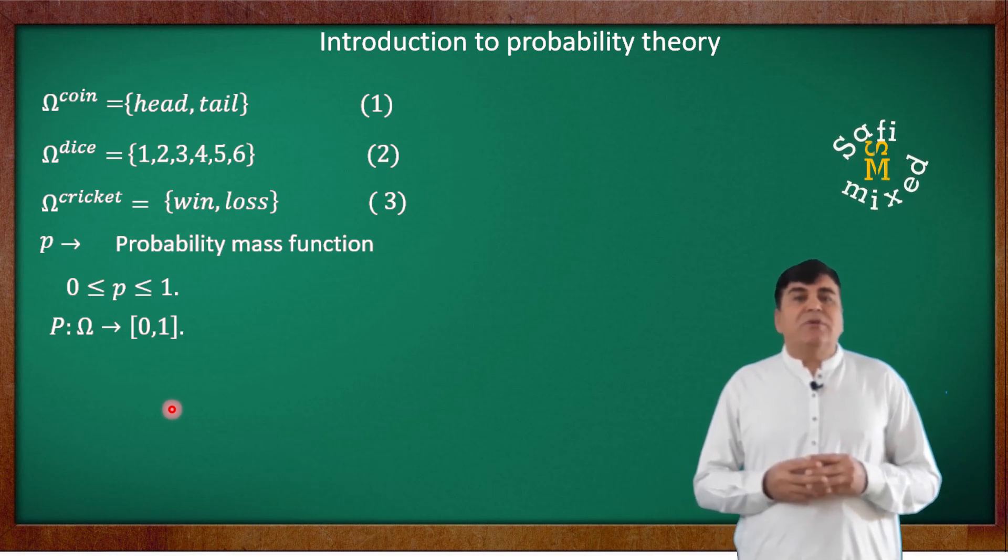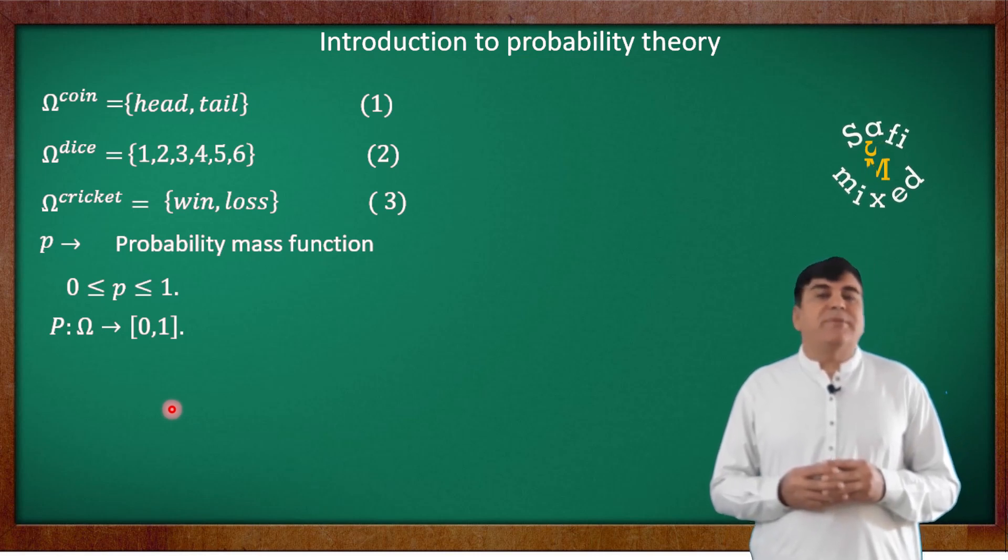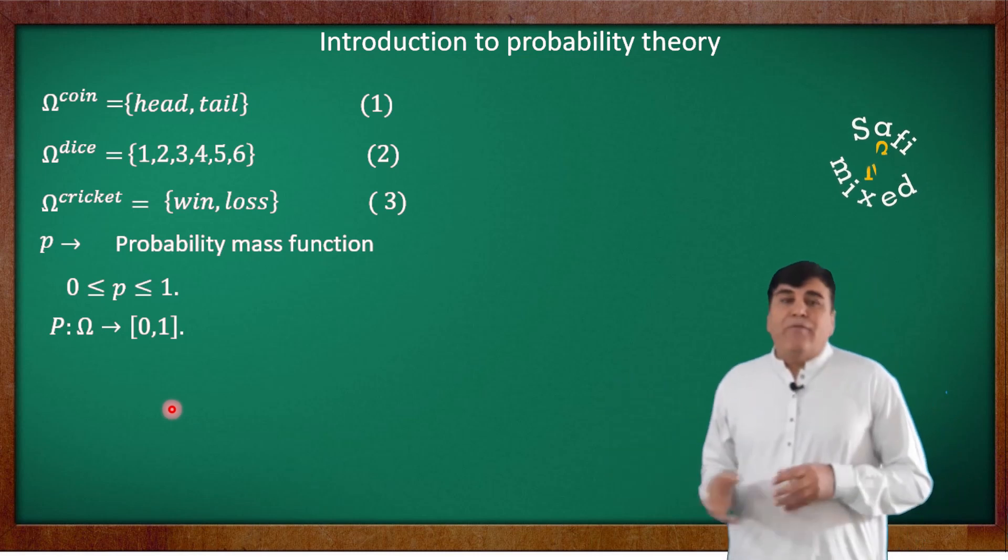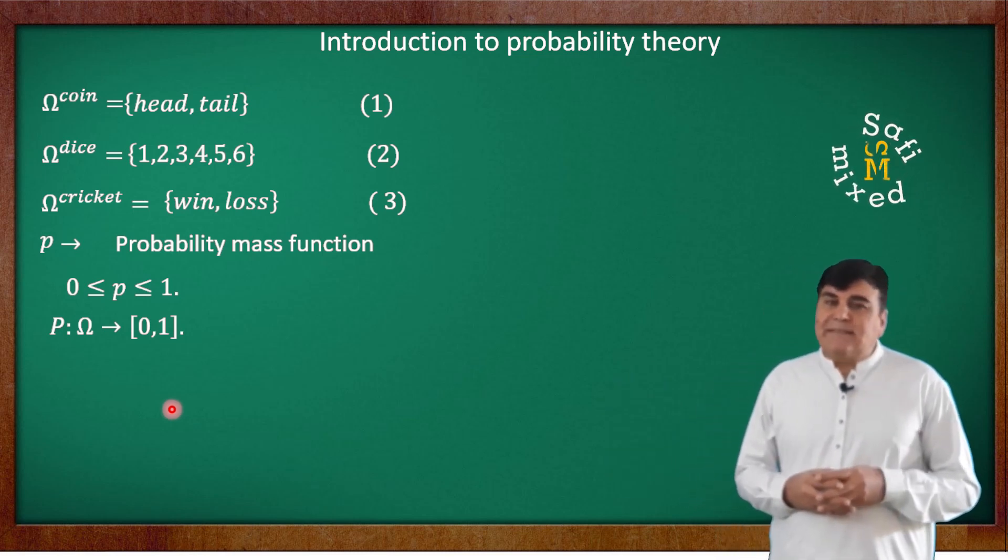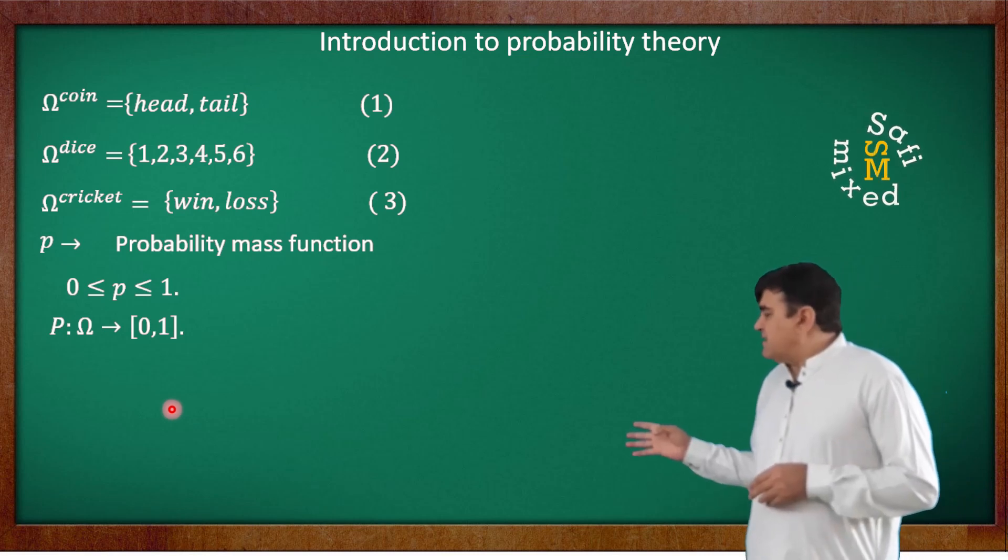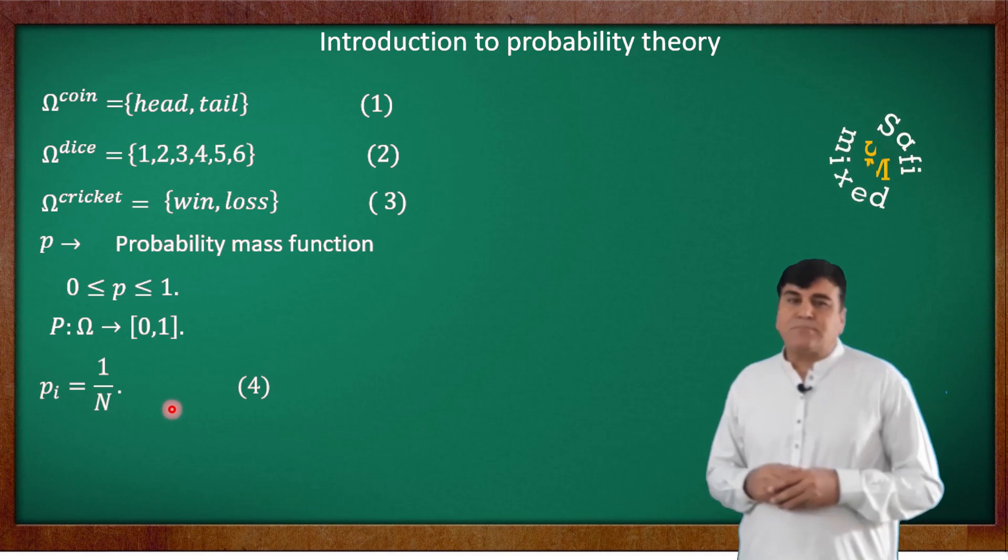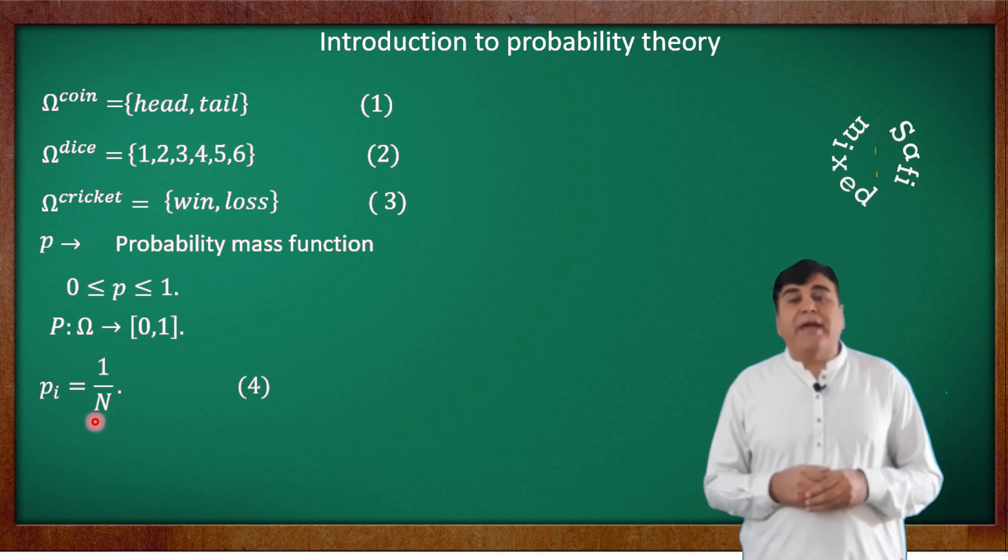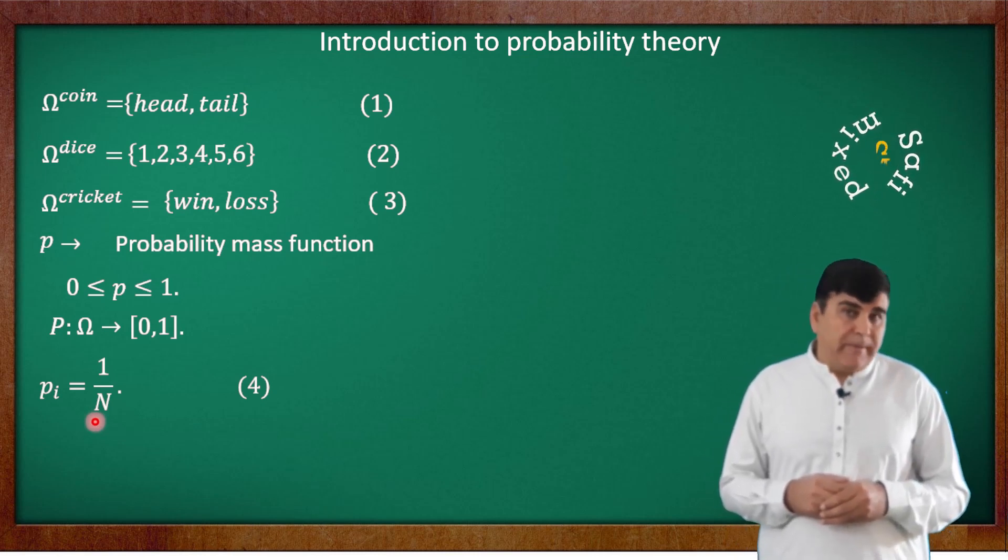If every outcome of an event is equally probable and the number of total outcomes of an event is represented by capital N, then the mass function of ith outcome is written as P sub i equals 1 over N. That is, every outcome has a probability equal to the inverse of the number of total expected outcomes of an event.